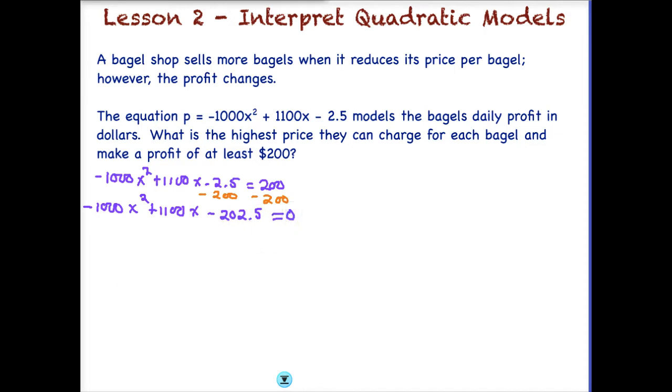And we're ready to work with our quadratic formula. So again we would want to identify our A, and our A is going to be negative 1,000. Our B is going to be positive 1,100. And our C value is going to be negative 202.5.